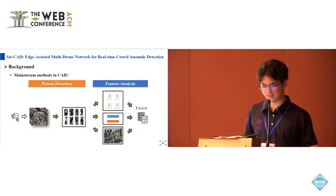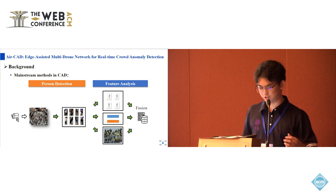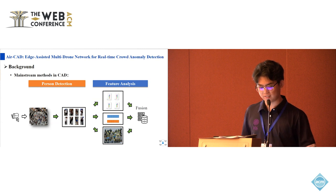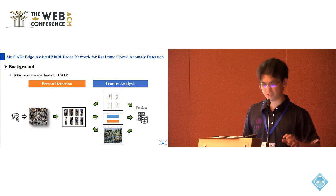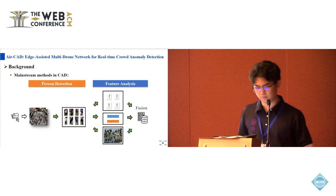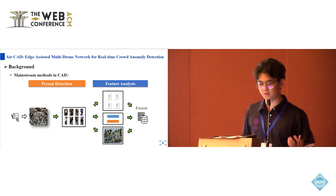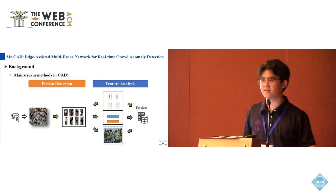Recently, feature-based CAD has gained popularity, comprising two stages: person detection and feature analysis. In the person detection stage, a person detector is used to detect the person in the image. In the feature analysis stage, the mainstream technologies usually use different types of features to judge whether the person is abnormal, such as analyzing the pose of the person or the velocity of the person.